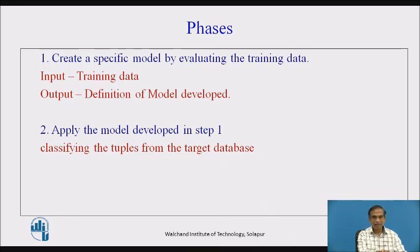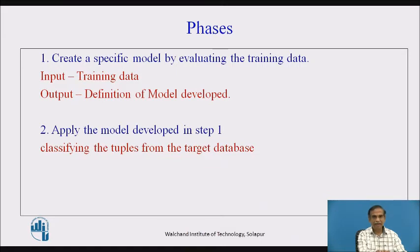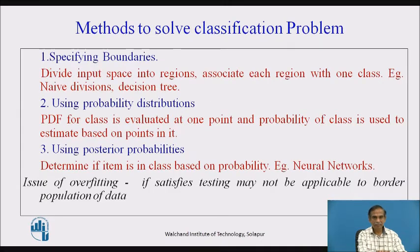Classification depends on two phases. Phase one creates a specific model by evaluating the training data — some data is reserved as training data to develop the model, so the output of phase one is the model definition. Then in phase two, this model is applied to classify the remaining tuples from the target database, placing them into the classes defined by the model.